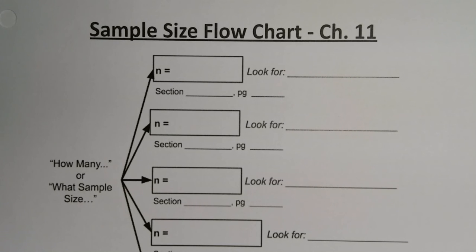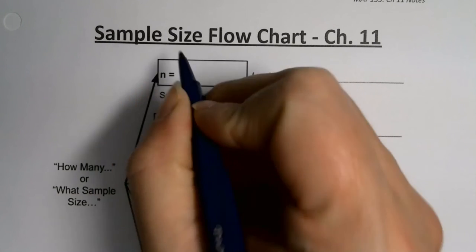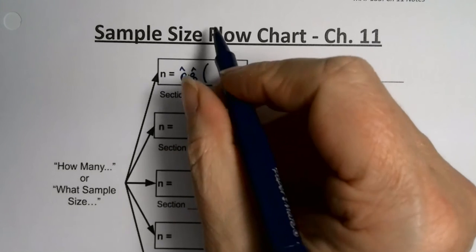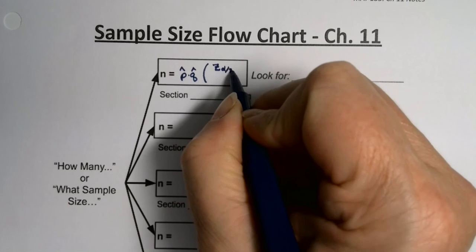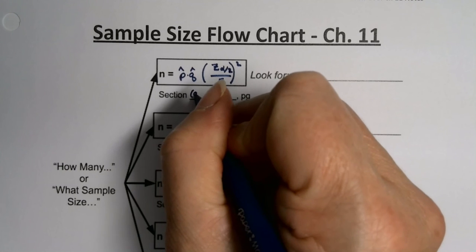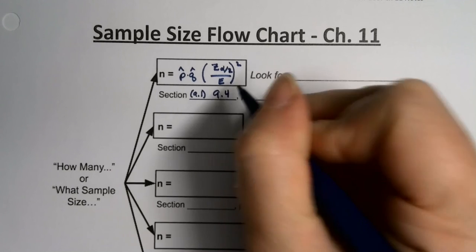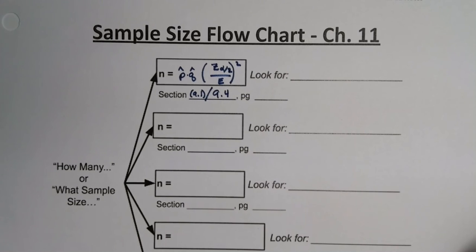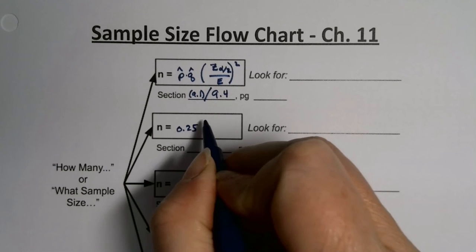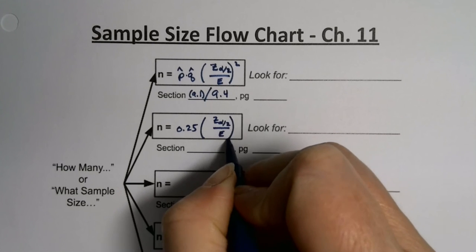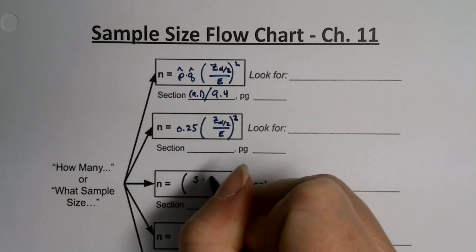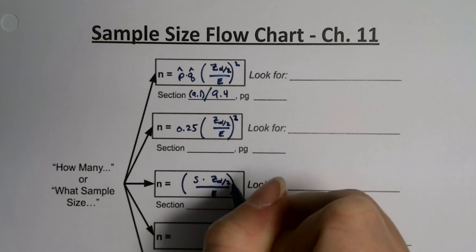The first formula is P-hat times Q-hat, then Z alpha over 2 divided by the error, all squared. We learned that in section 9.4. Then we learned this one: 0.25 times Z alpha over 2 over the error squared. Then there is S times Z alpha over 2 over the error squared — that one is really different, that one's unique.